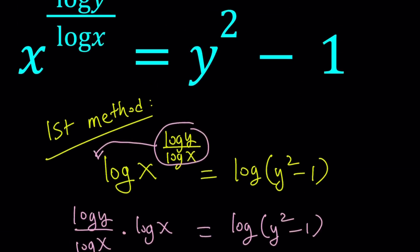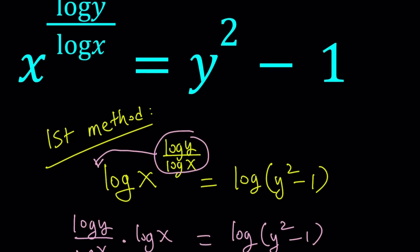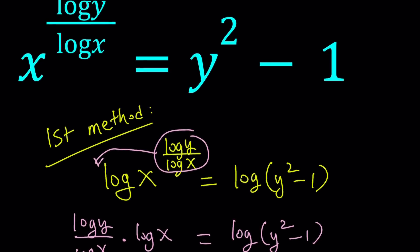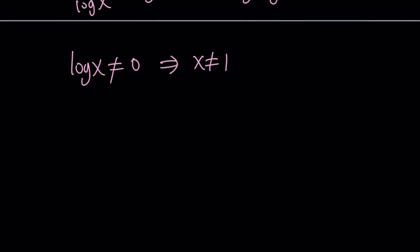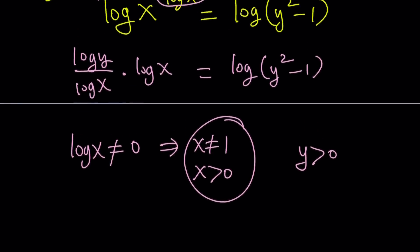And also, since we have log x and log y, you do not want x and y to be less than or equal to 0. So x, y has to be positive. So x cannot be 1, x has to be positive, and y has to be positive. When we look at the graph, this is going to make more sense. So, under those conditions, let's go ahead and solve this problem.